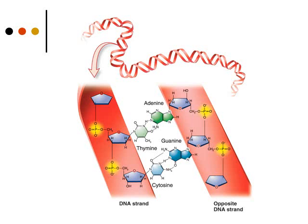DNA is usually found as a double strand, and it twists together to form the double-stranded helix shown at the top. The two DNA strands run in opposite directions and undergo complementary base pairing with each other. Thymine hydrogen bonds with adenine, so thymine and adenine always pair together. Cytosine and guanine also base pair with each other, held together by hydrogen bonds.